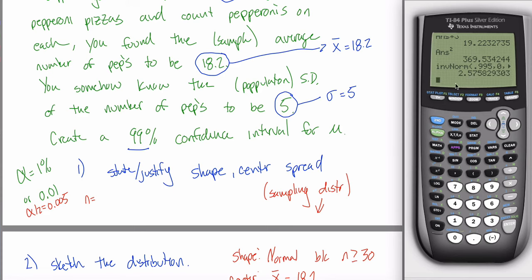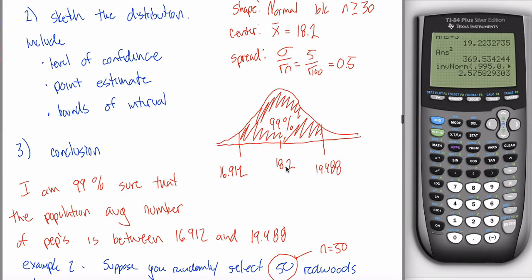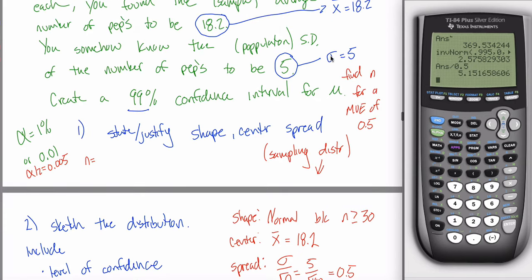Go to inverse norm. Area to the left is 0.995, center and spread are 0 and 1 because I'm looking for a Z score. Note this Z_(α/2) is bigger than last time because I have to go up and down by more spreads to capture 99% in the middle. In this problem, the margin of error ended up being 1.288 — suppose someone says that's too big and wants it to be only 0.5. Divide Z_(α/2) by 0.5 and multiply by sigma.